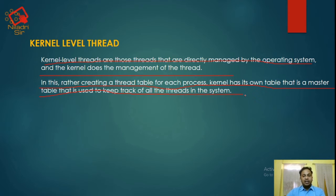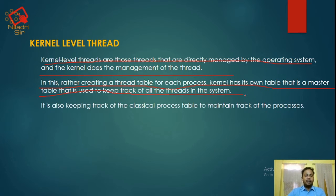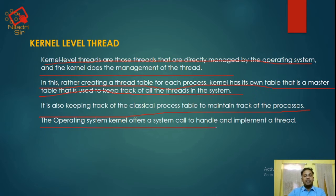In kernel-level threads, there is a master table where all threads are tracked. It also keeps track of the classical process table to maintain track of processes. The operating system kernel offers a system call to handle and implement a thread. Unlike user-level threads where system calls do not intervene, in kernel-level threads, system calls are used, making thread implementation easier.